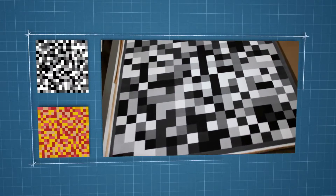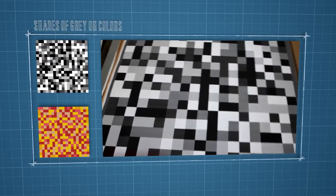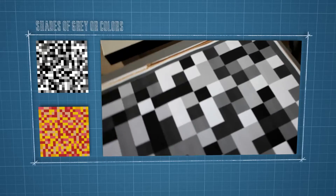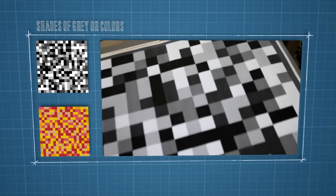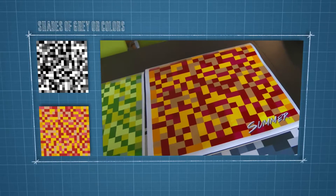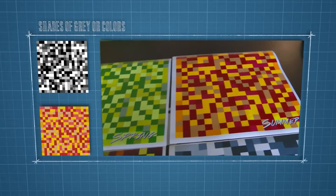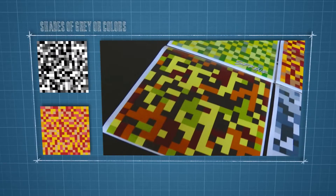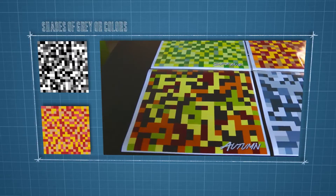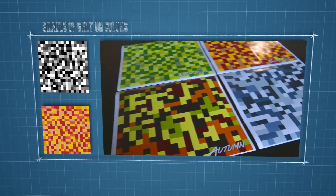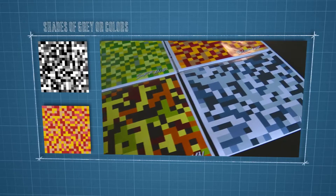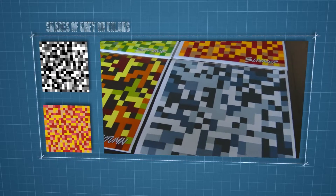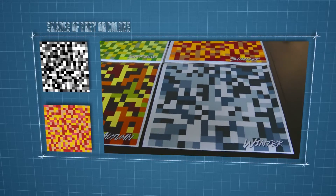Our marker field is a grayscale grid of squares. Alternatively, a set of colors can be used. Even when a small portion of the grid is detected in an image, the location within the field can be determined, because small square sub-windows of the field are unique.